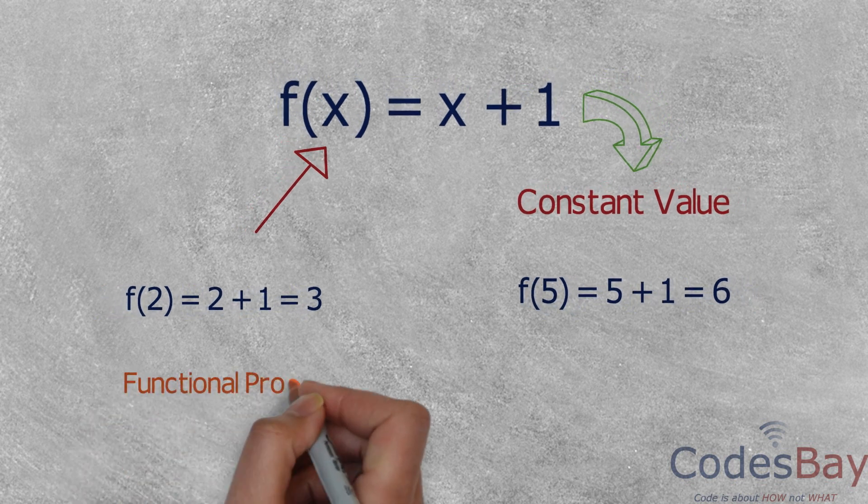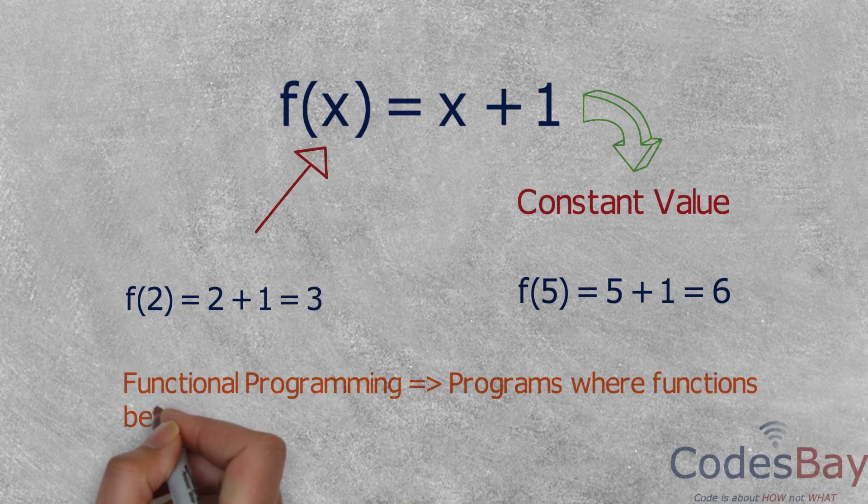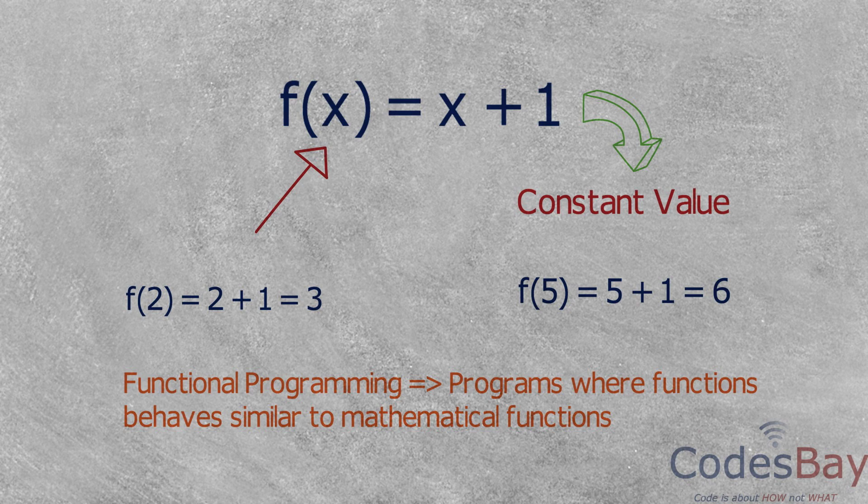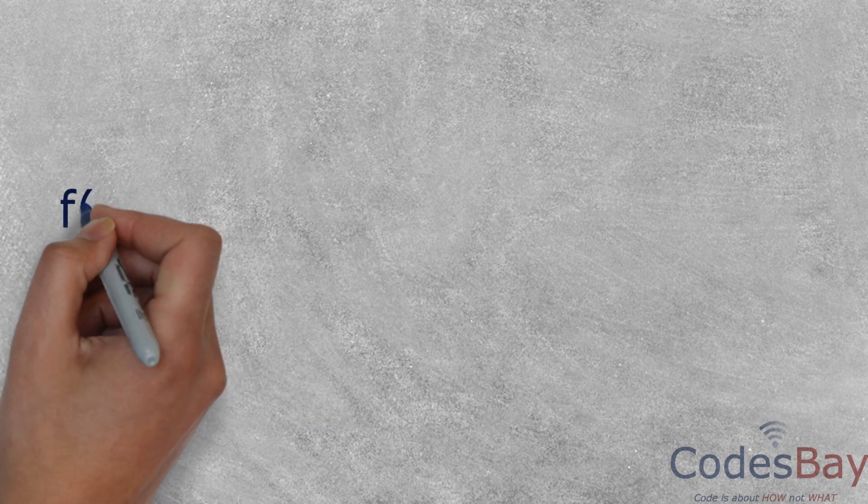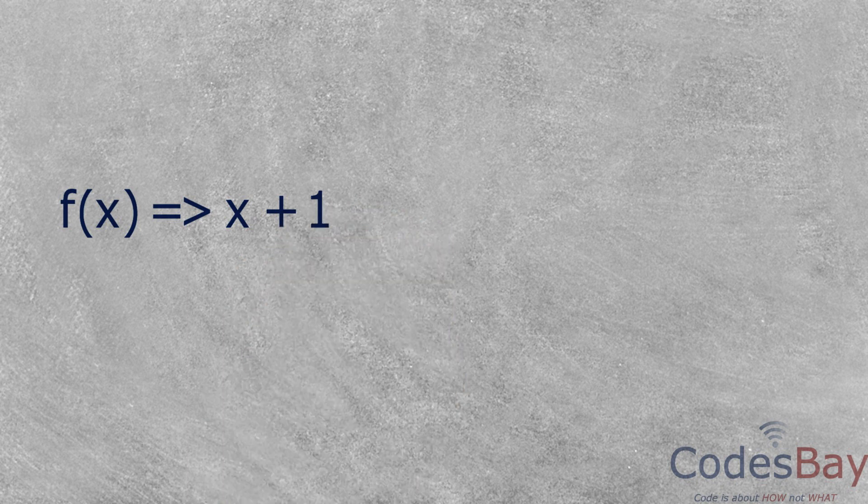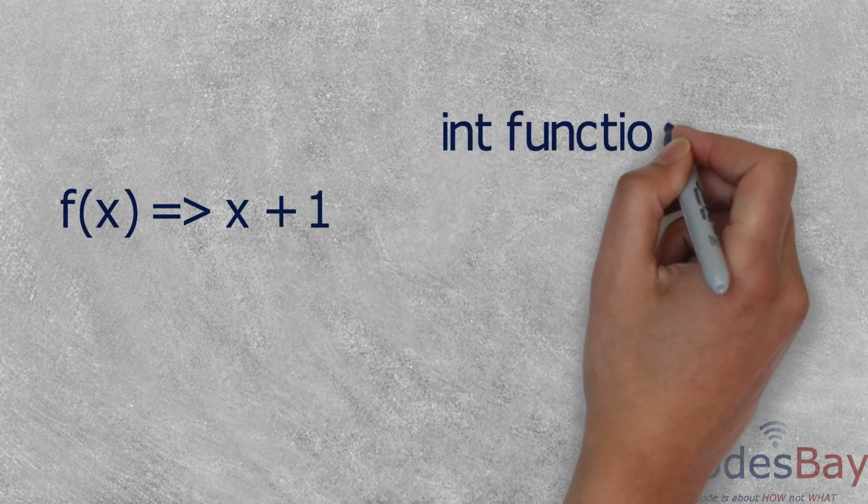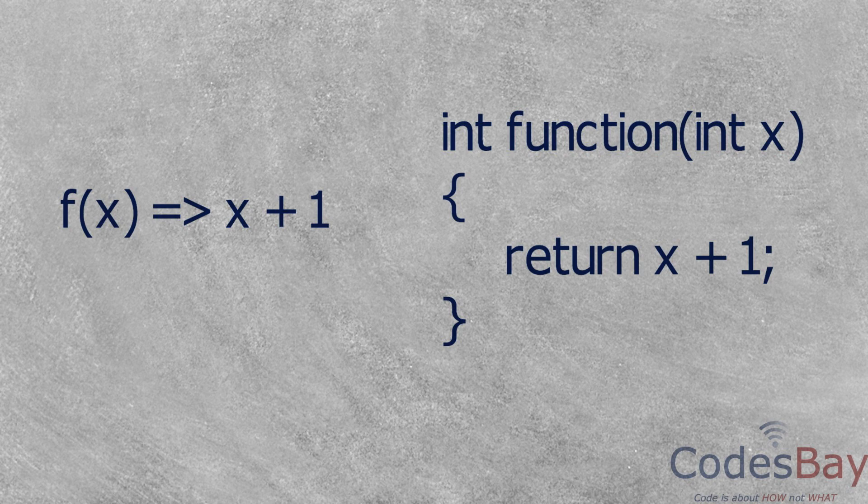So in functional programming, the programs written in programming language behave exactly similar to mathematical functions. We can write the function f(x) = x + 1 in any programming language in a very simple way. We define the function which takes a parameter and returns x + 1.